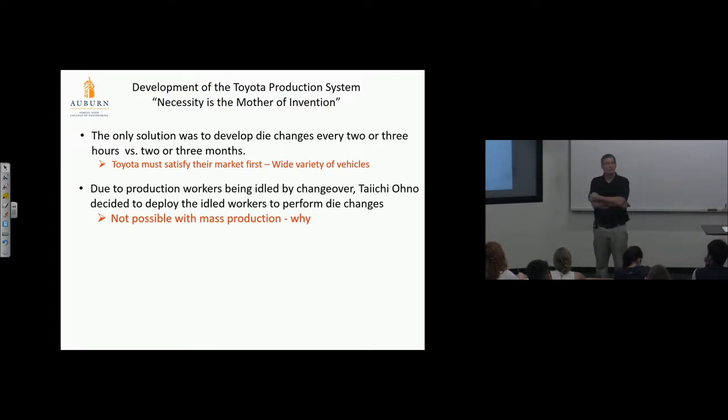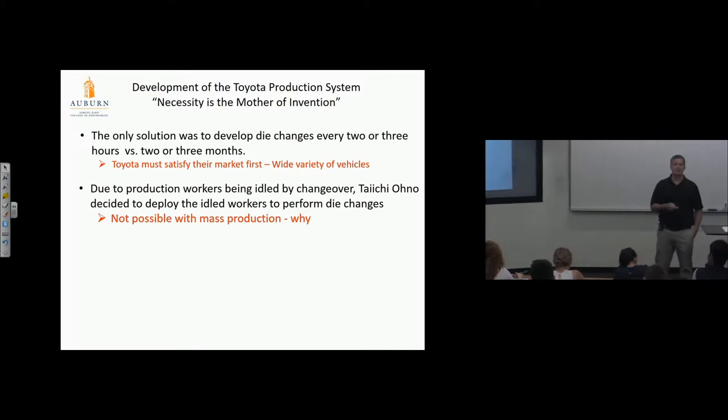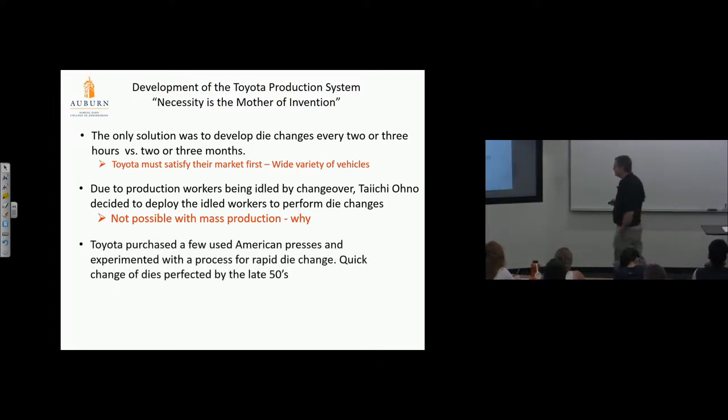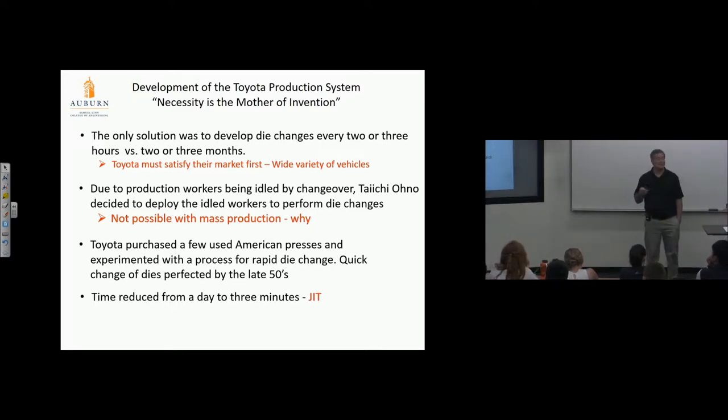Due to production workers being idled by changeover, Taiichi Ono decided to deploy the idle workers to perform the die changes. So if I'm shutting the line down, I've got a batch of employees, why don't I just utilize them to rapidly change the die? Not possible in mass production. Why could you not do that in mass production? One guy does one job, and so he does for years and years and years. Very good, yeah. Everybody's labor is so specialized. They don't have this variety of knowledge that they can do anything. Not to mention, once they became unionized, they had unionized classifications. Electrician couldn't be a millwright. A millwright couldn't do plumbing. An operator on the line could do no technical work. They are very heavily classified, and they are very specialized. So they couldn't just utilize labor that's available to them.